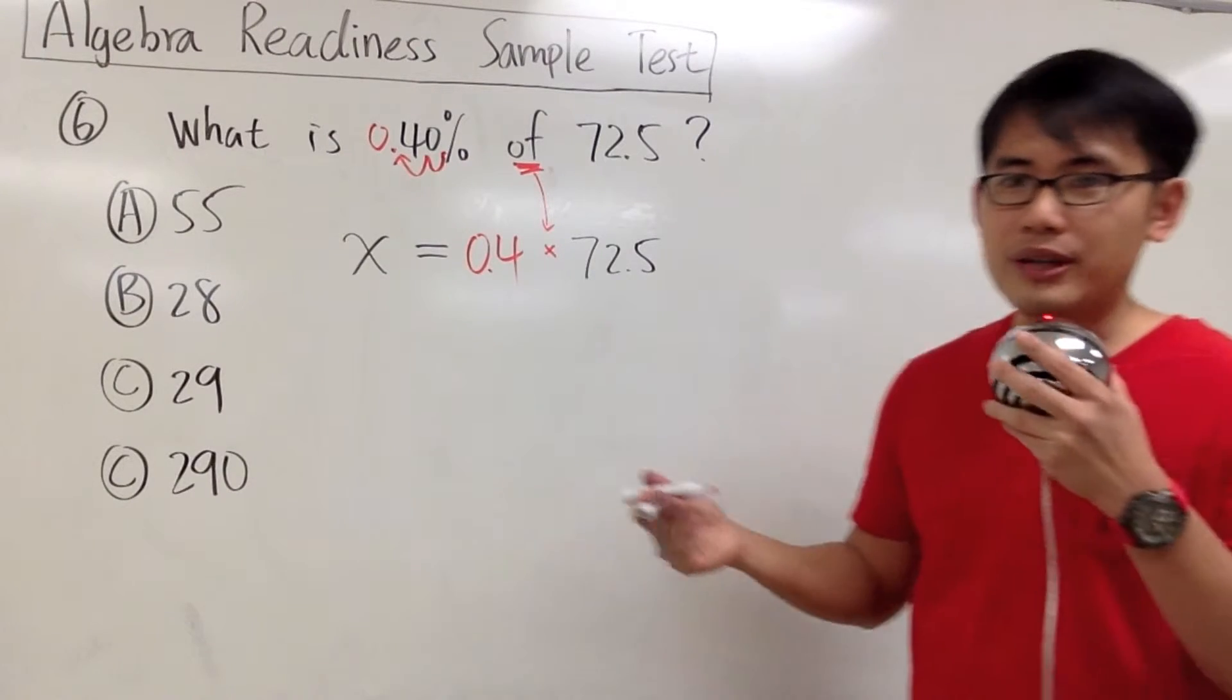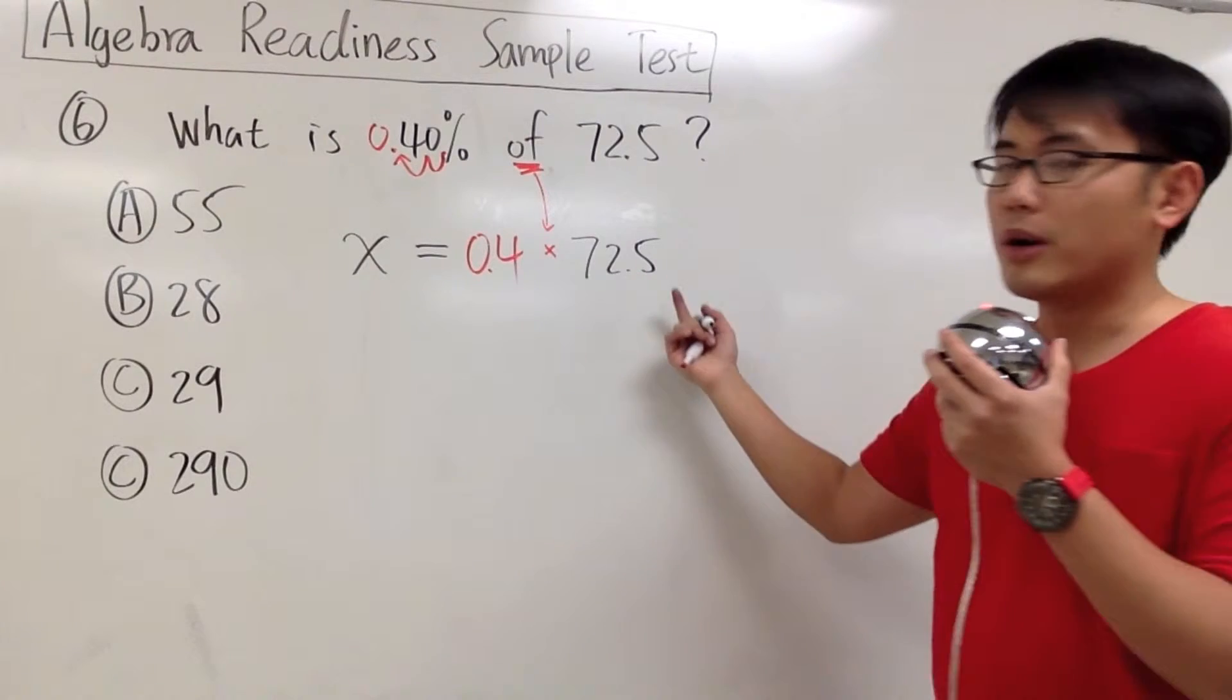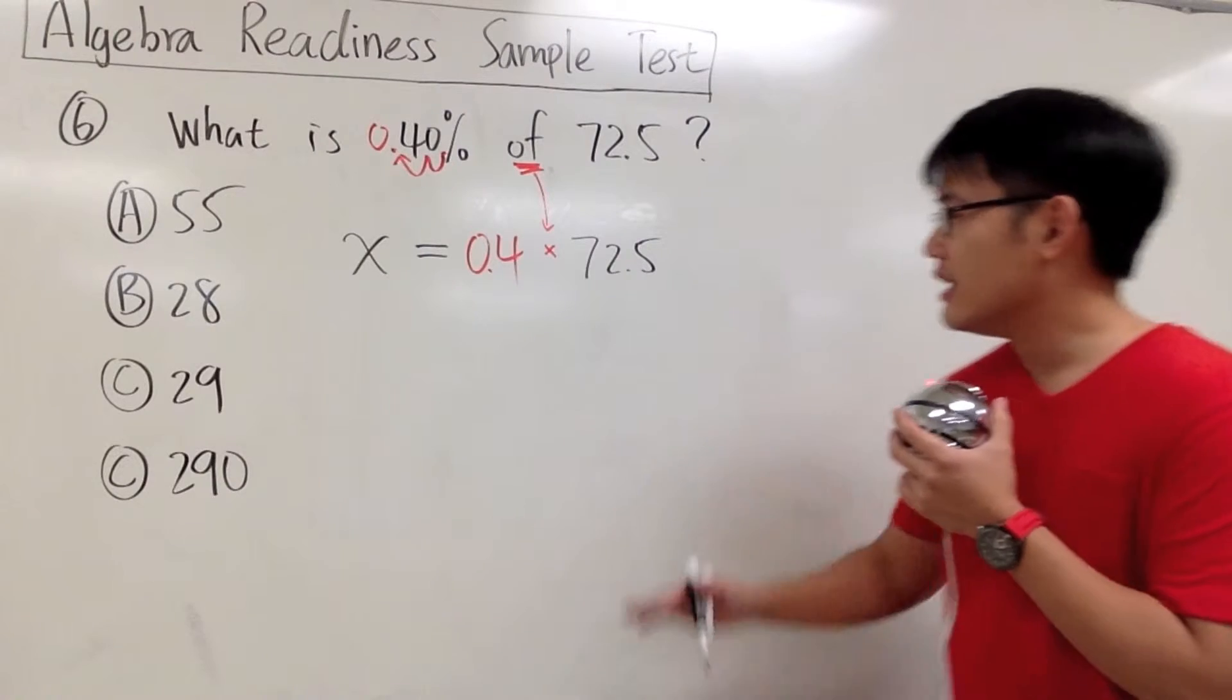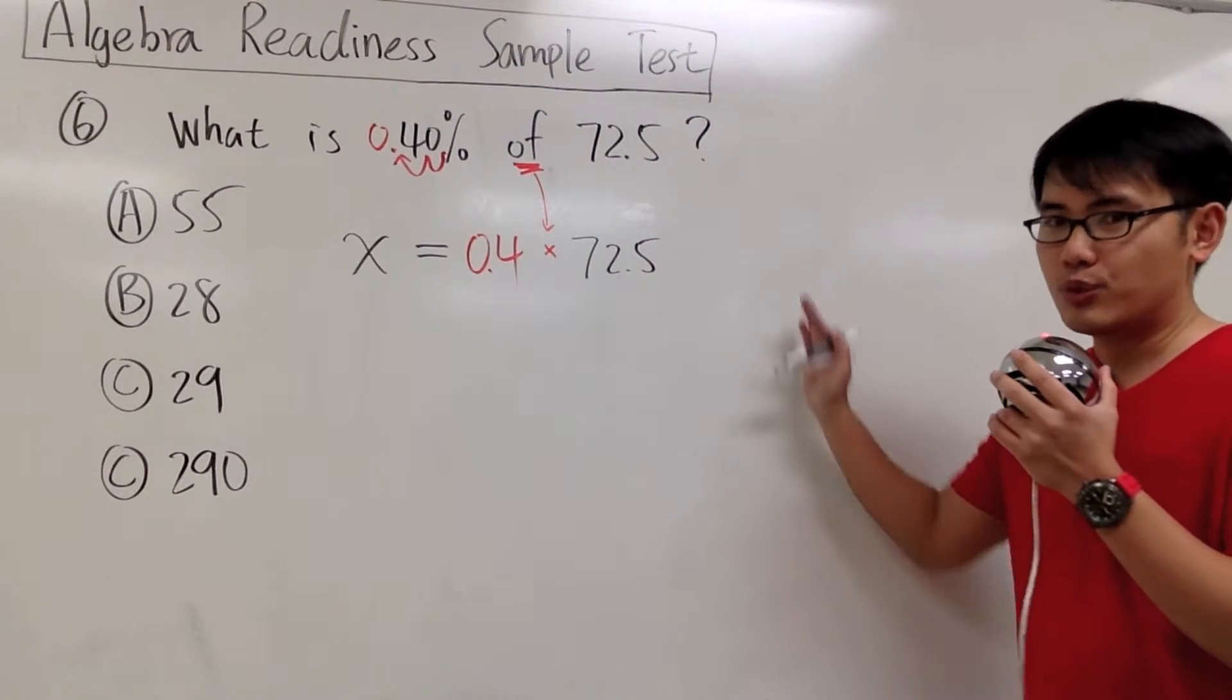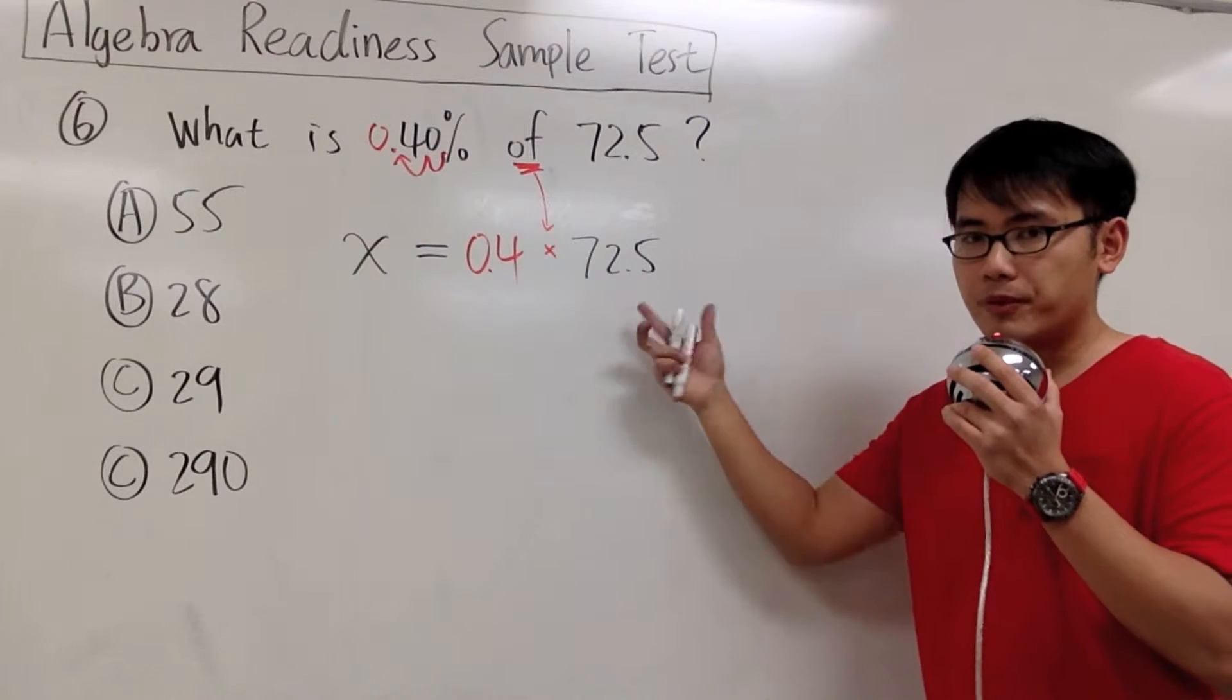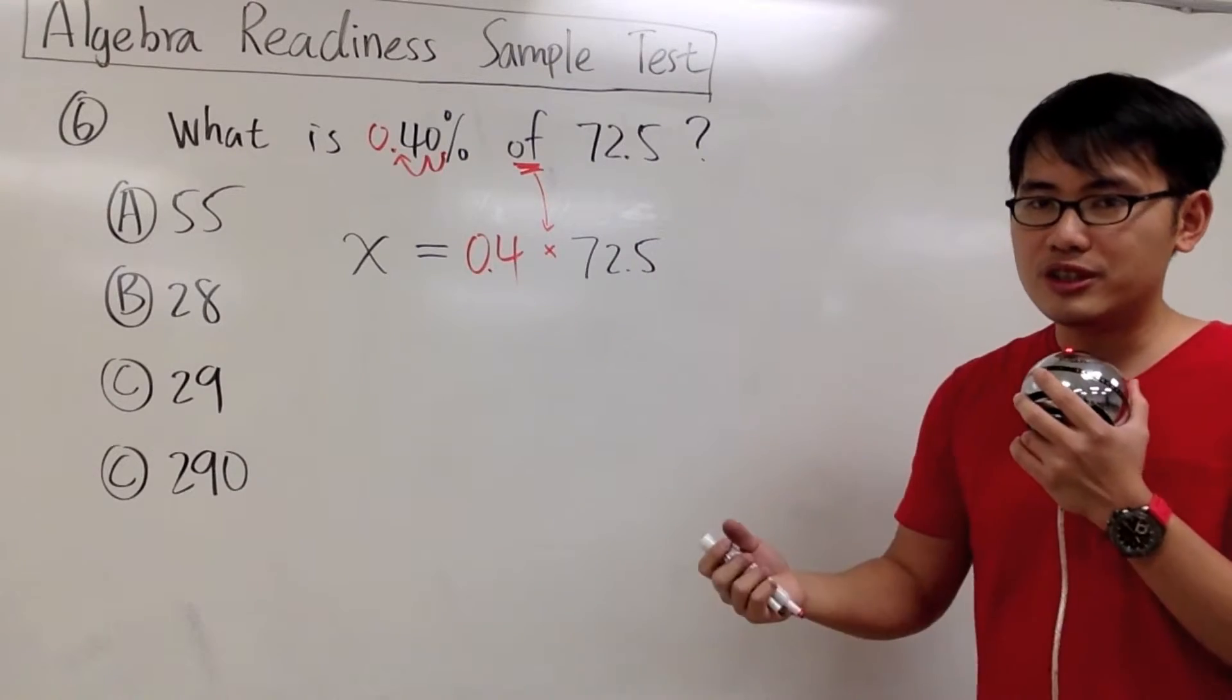So now the question is only asking us, what is 0.4 times 72.5? Remember we have no calculator, so we have to do this by hand. To multiply decimal numbers, I line up the numbers toward the right. When we set up,